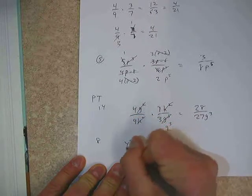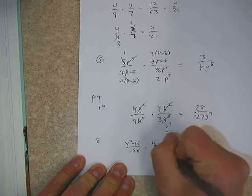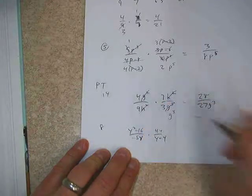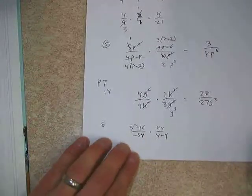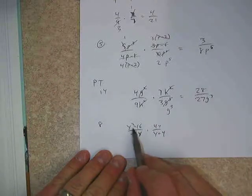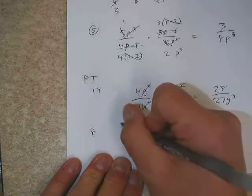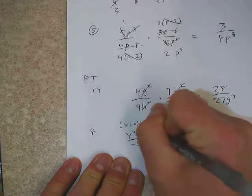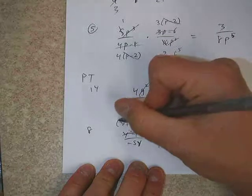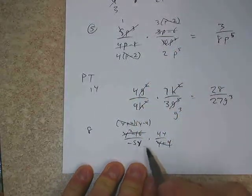One more from the practice test. While we're here, we've got number 8 we'll go back up to. So number 8 says y squared minus 16, negative 5y, times 4y, y plus 4. And again, I can't stress enough how important it is that before we do any reducing at all, we make sure that we factor anything that can be factored. We should recognize here that we have y squared minus 16. That's going to be our difference of two perfect squares. So y plus 4 times y minus 4.